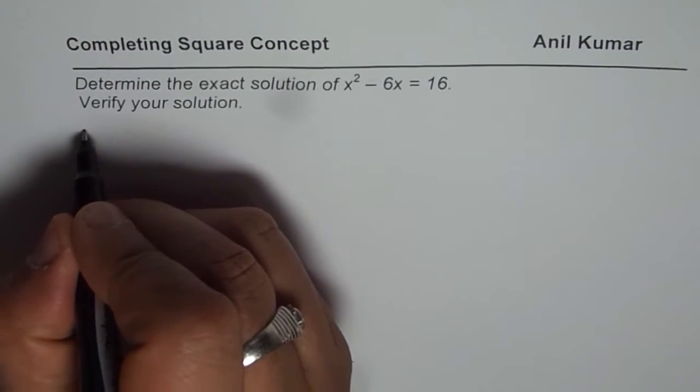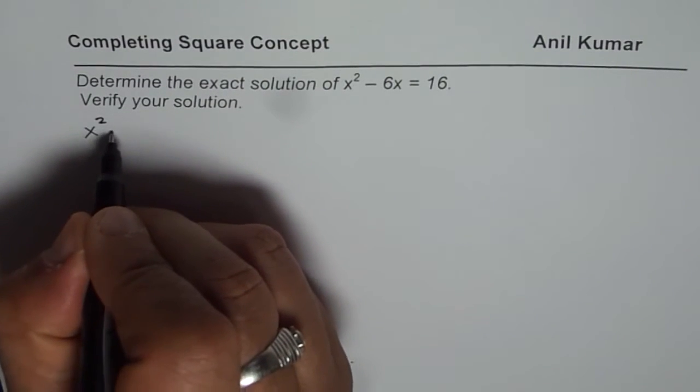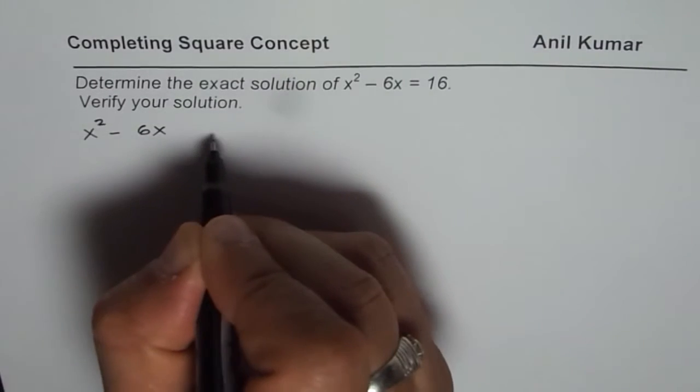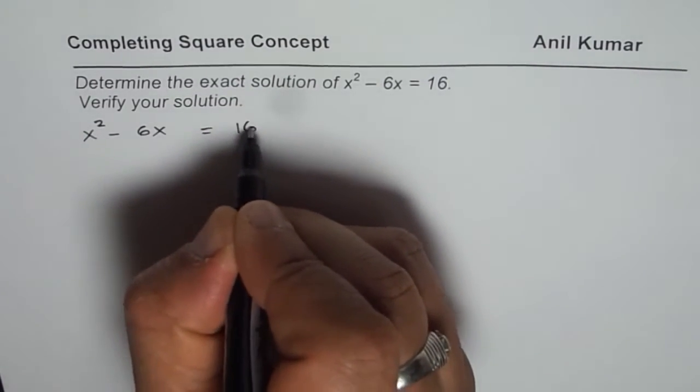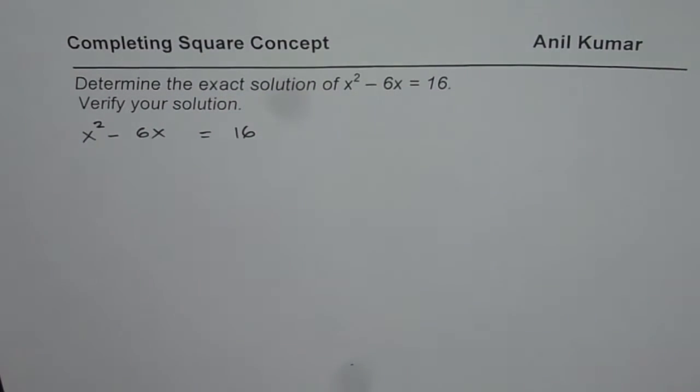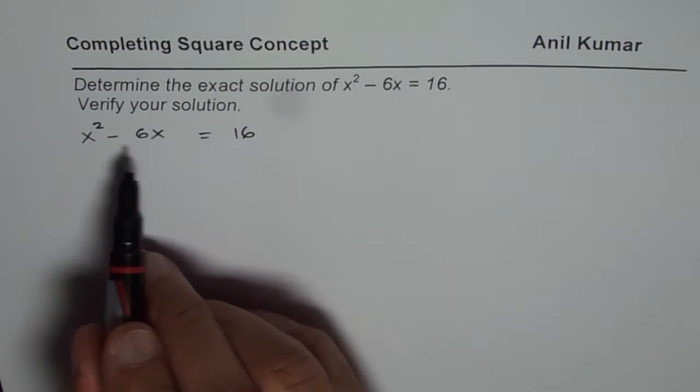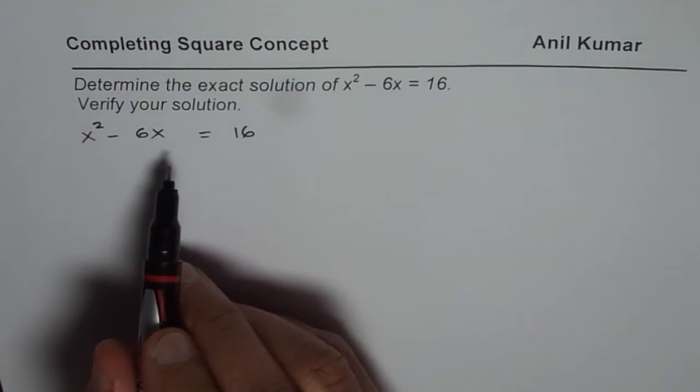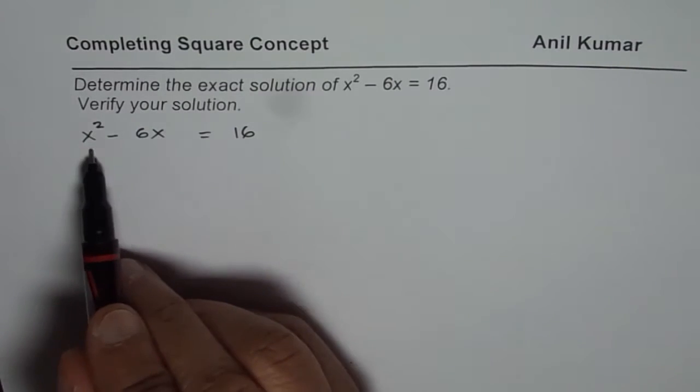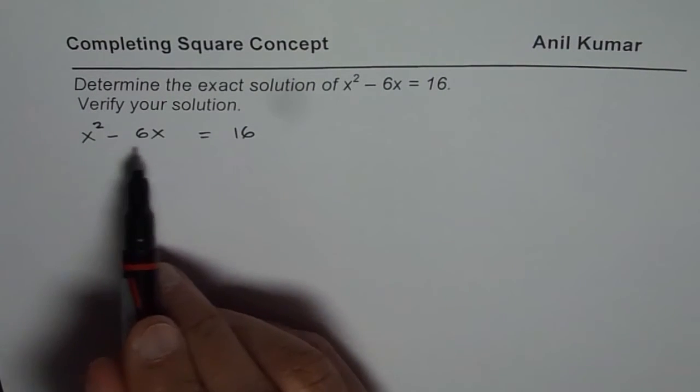Let's begin by copying the question which is x squared minus 6x equals to 16. Now, what is the first step to solve such an equation? First step is, we need to complete the square on the left side. The reason is, we have got two x's and now we cannot easily isolate them.